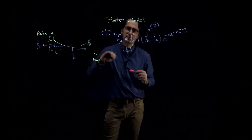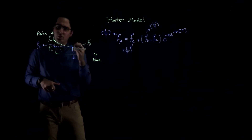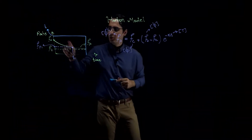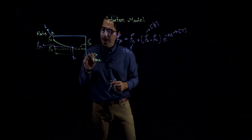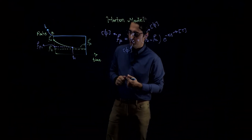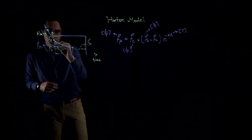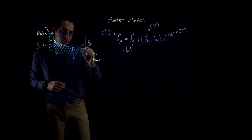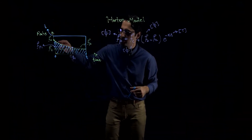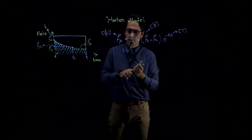Now, let's assume that we have a constant uniform rainfall with the intensity of i. We have a rainfall with the intensity of i shown here. Since you have the infiltration capacity curve and you have the rainfall, if I ask you what is the amount of infiltration using these graphs, you would tell me that since this curve represents potential infiltration, the area below this curve represents cumulative infiltration from time 0 all the way to time t. To calculate that area, the only thing we need to do is integrate the Horton equation, and you are 100% correct.